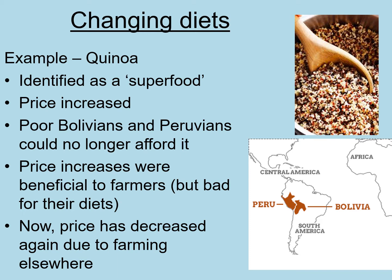We'll start with changing diets, looking at the example of quinoa. 'Superfood' isn't actually a scientific term — it's just a marketing term. Quinoa is very high in protein and low in carbohydrate; it's a very complete and healthy food that supplies a lot of the nutrients you need.